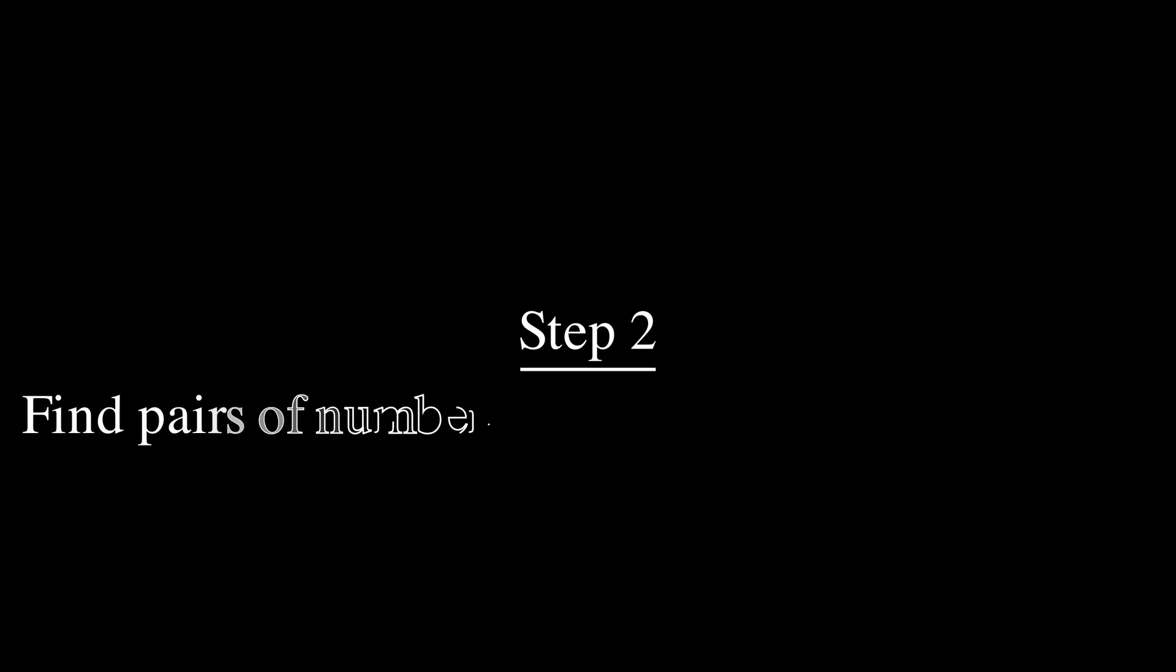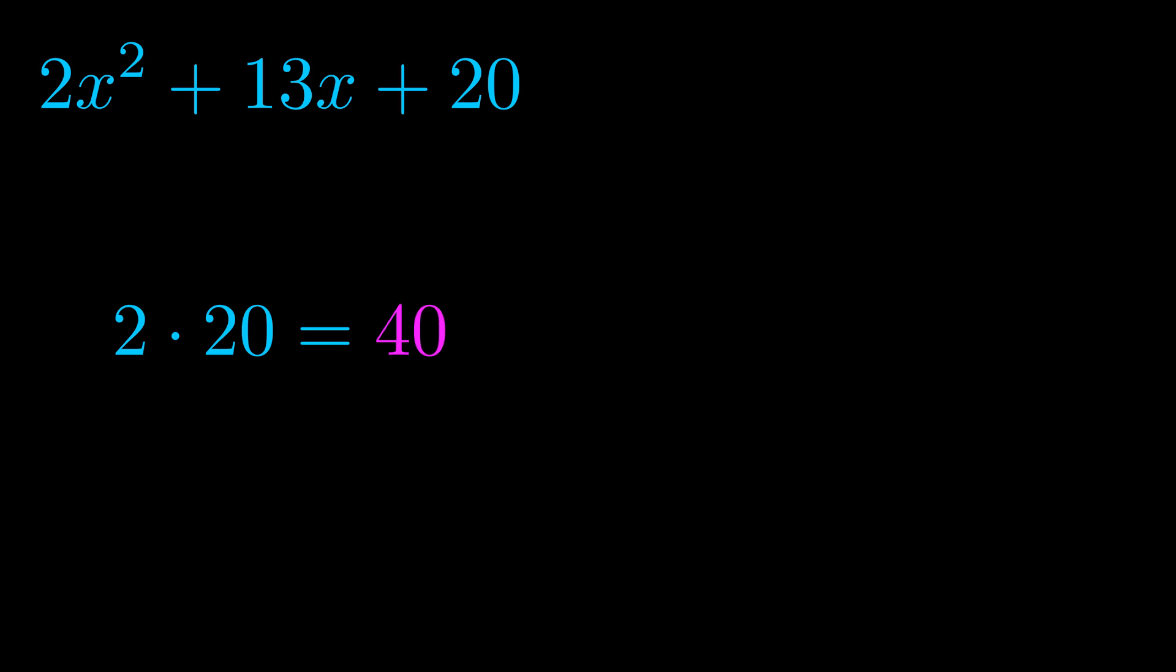Step two is to try to find all of the pairs which multiply to this number. Now it turns out you don't really need to find all of them, but go ahead and write down as many numbers as you can that multiply to the magenta value for now. Pause the video and resume when you're ready to continue.